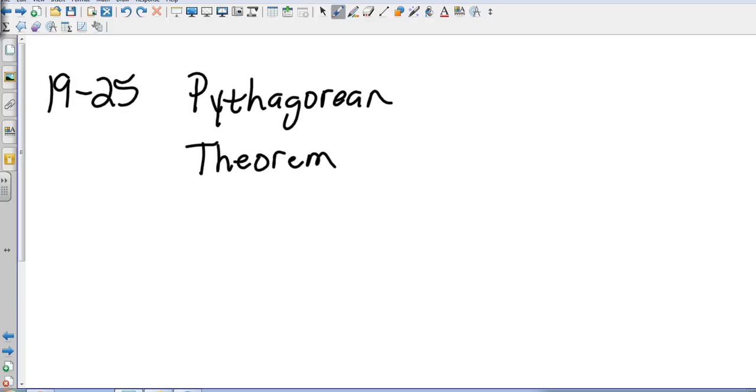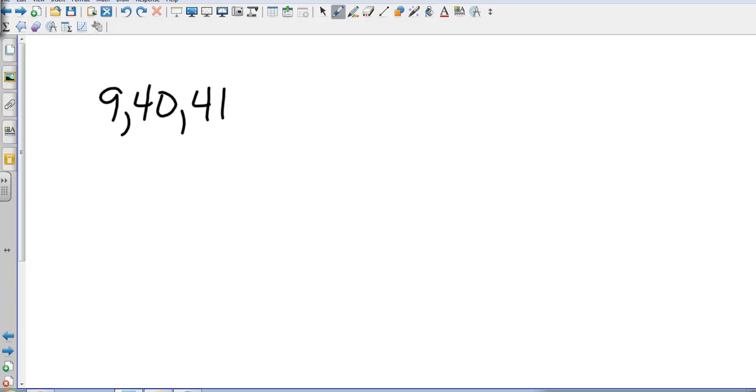19 through 25 are all Pythagorean theorem. So, I'm not going to do six Pythagorean theorem questions. What I am going to do is just one that we haven't seen yet. We've already done a couple of them. So, looking at 19 through 25, one that might look a little bit different is this one. And they're going to ask you, is this a right triangle? So, we're just going to plug this into the Pythagorean theorem and see if it works out. So, that's going to be 81 plus 1600 equals 1681.